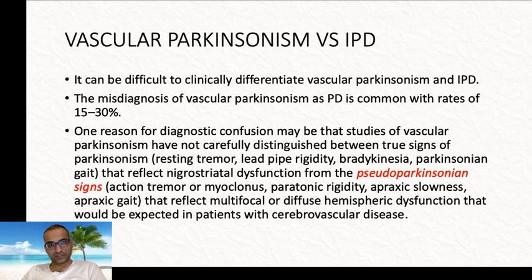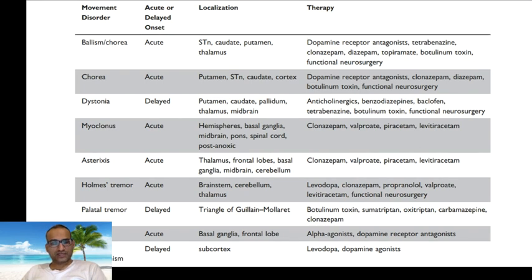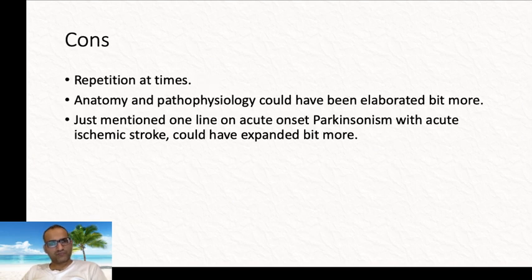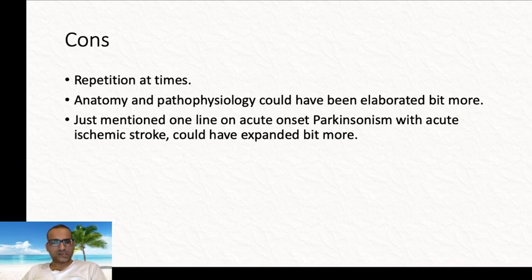In closing, the article provides a useful summary table of all conditions. Overall, I found the article simple, with plain language and discussion that was to the point — well summarized. However, there was some repetition at times, and the underlying pathophysiology could have been explained better. Acute-onset parkinsonism was only mentioned in one line, and I felt it deserved more detail. That's about it — thanks everyone.